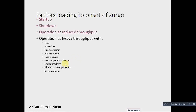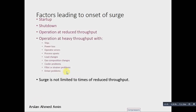Filter or strainer problems can also lead to surge. A strainer is a device installed in the suction line before the compressor to remove foreign particles. If the strainer becomes clogged, a no-flow condition can occur. Driver problems are also a primary cause. Surge is not limited to times of reduced throughput — surge can occur at full load as well.